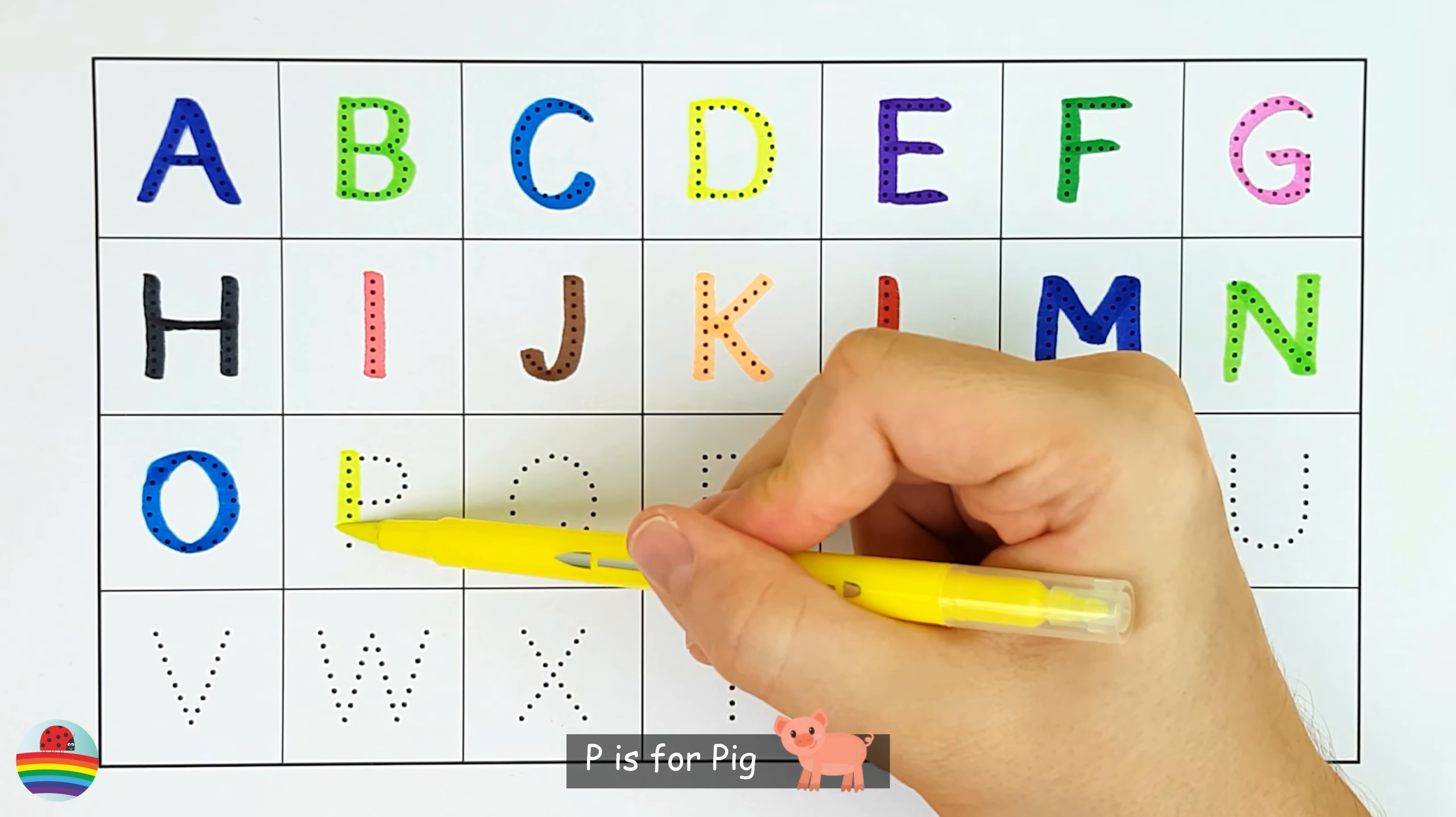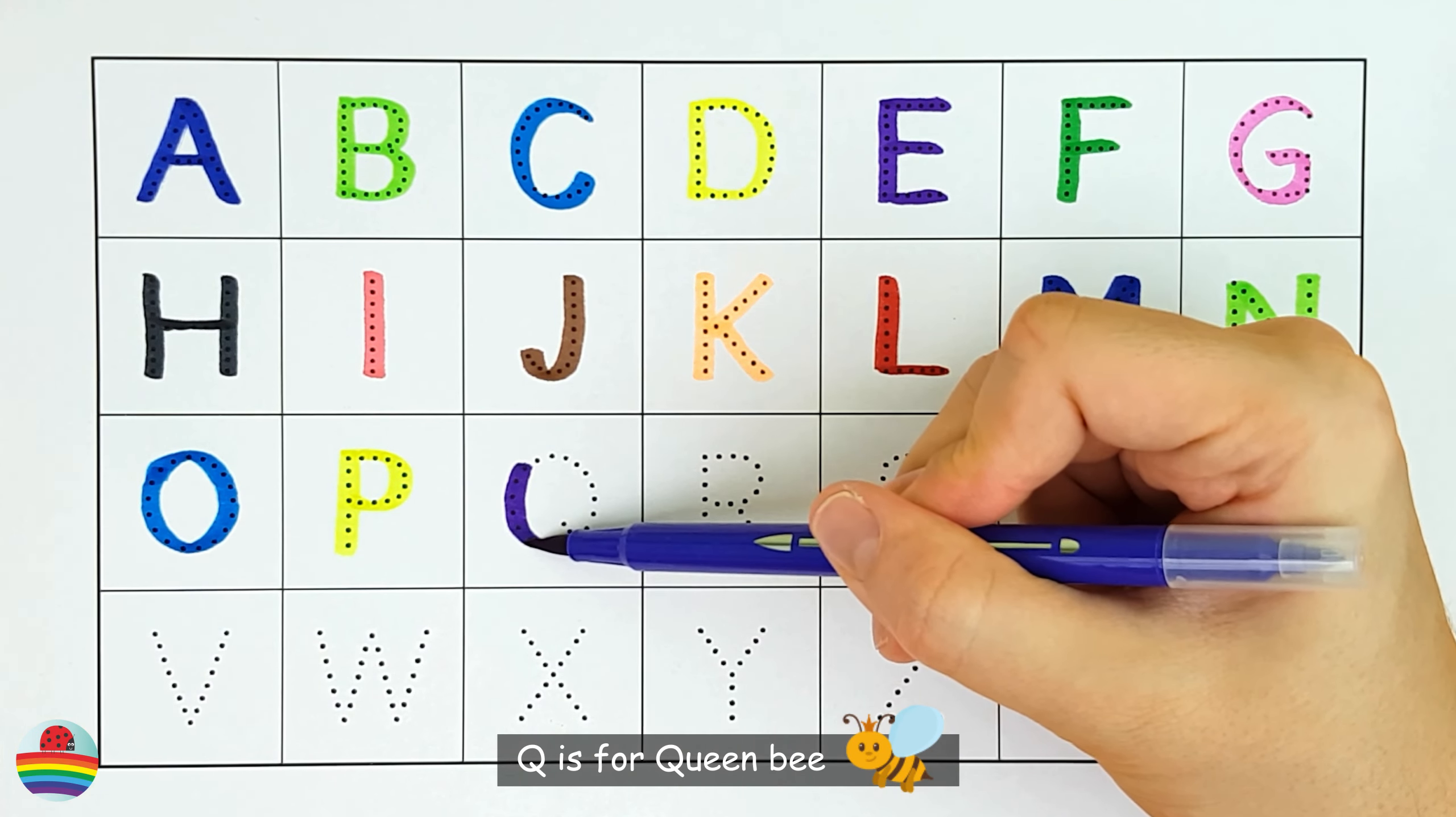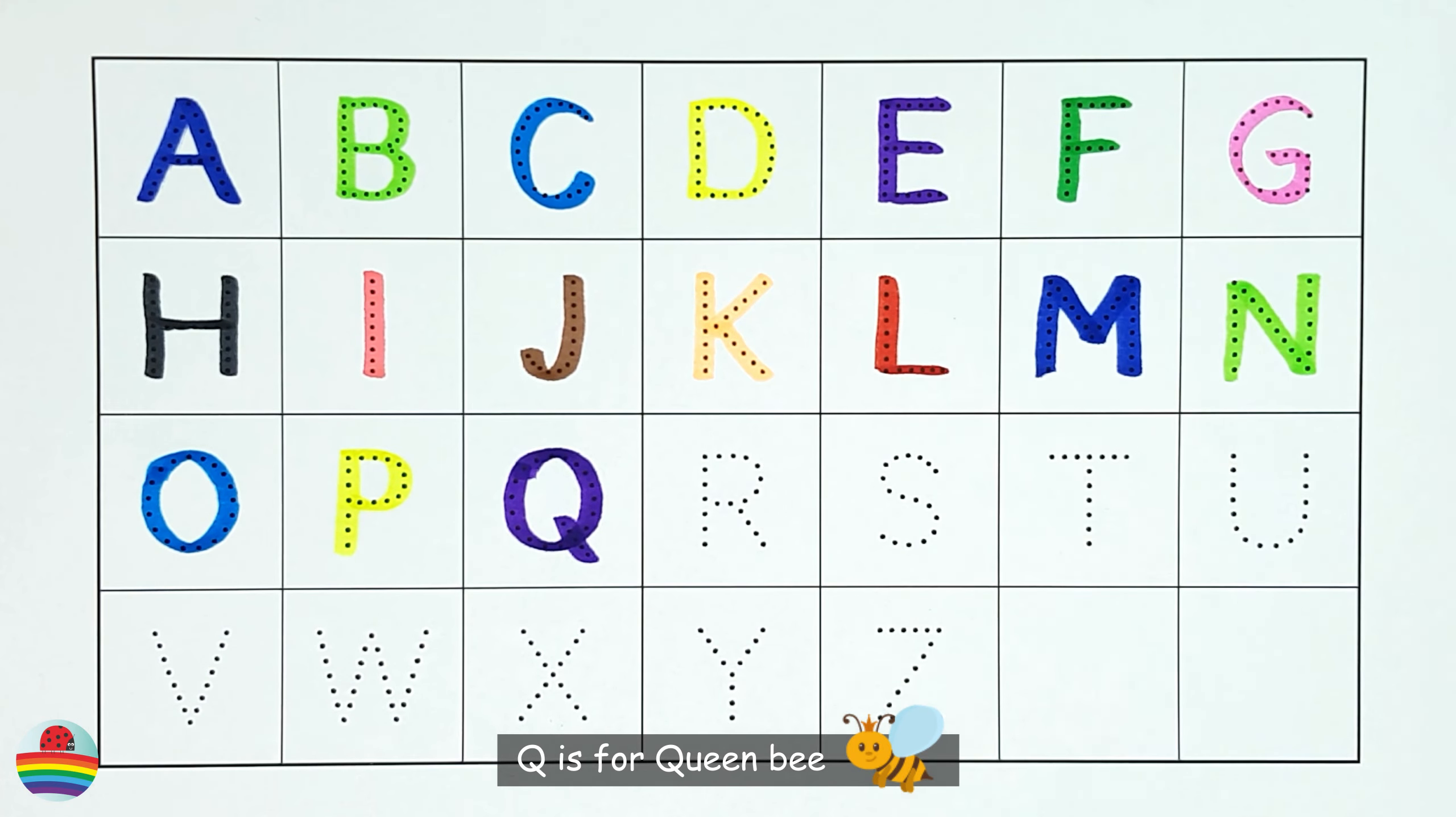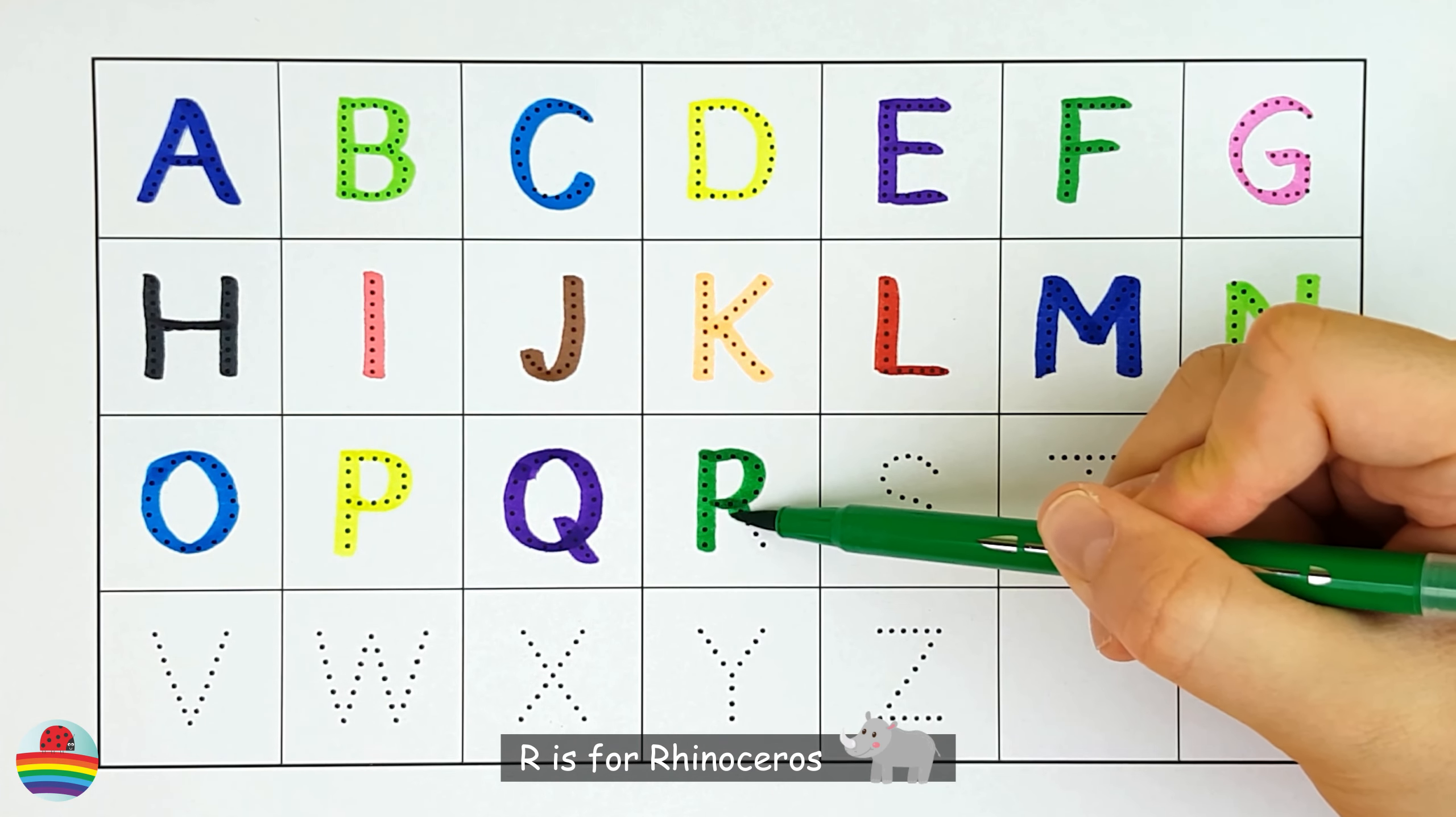P. P is for Pig. Q. Q is for Queen Bee. R. R is for Rhinoceros.